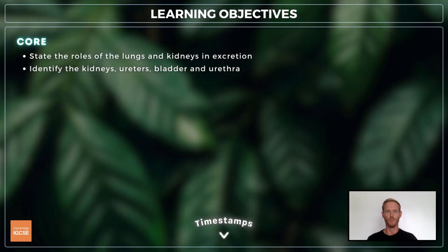For topic 13.1 you need to identify the roles of the lungs and kidneys in excretion and identify the structures of the urinary system.